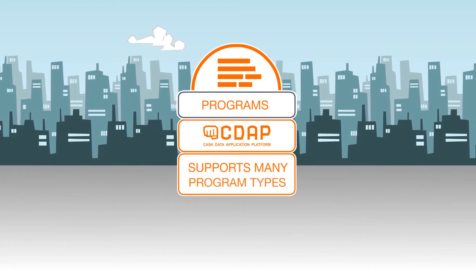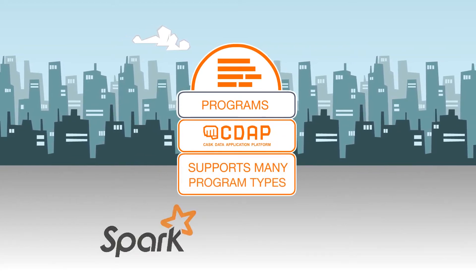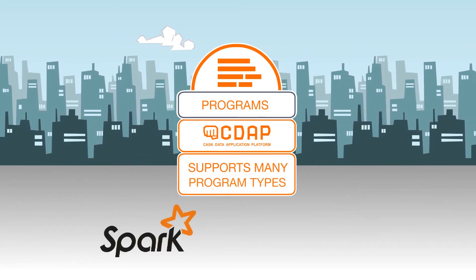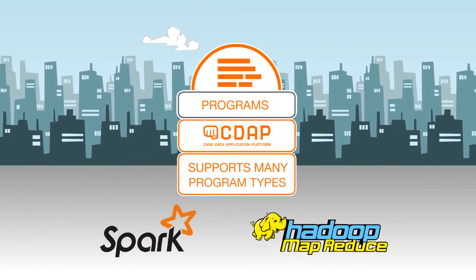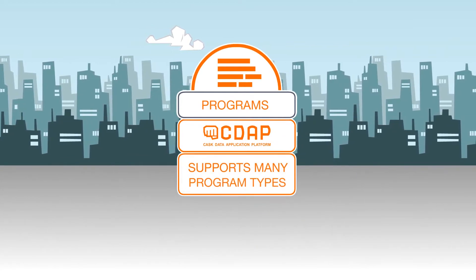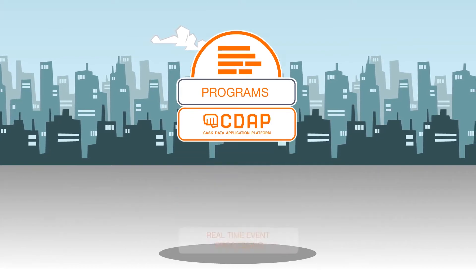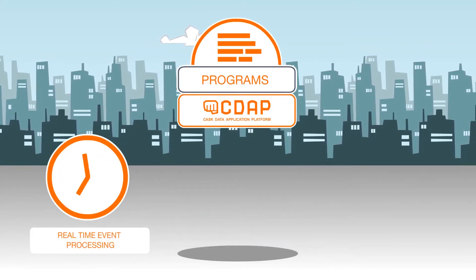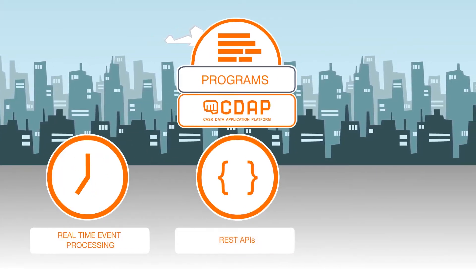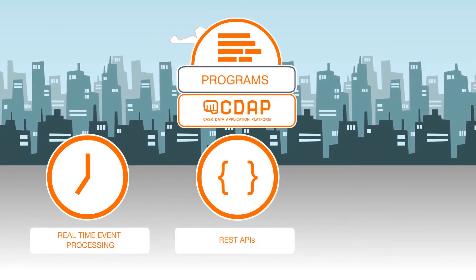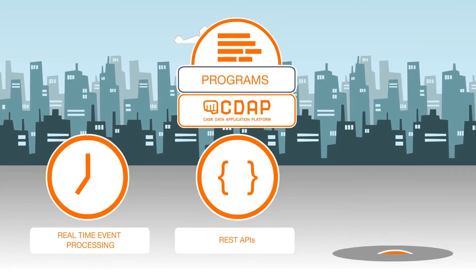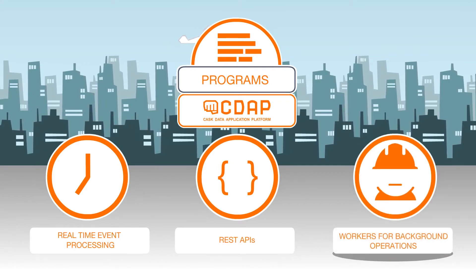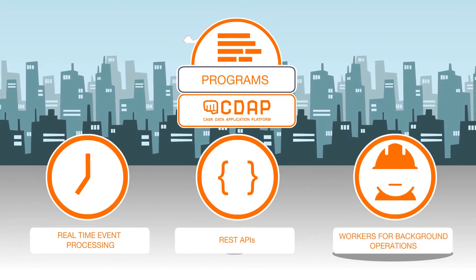CDAP supports many program types, including existing Spark and MapReduce jobs, flows for exactly-once real-time event processing, services for REST APIs, and workers for background operations.